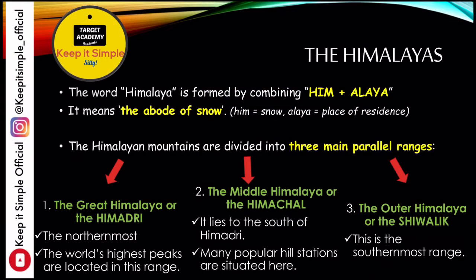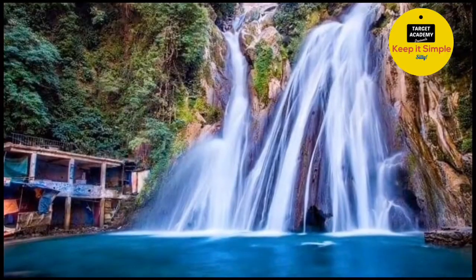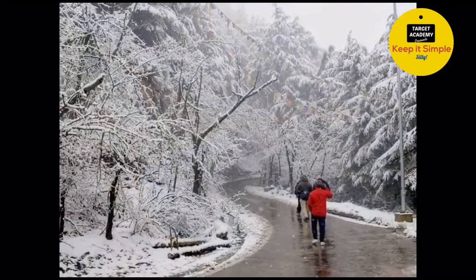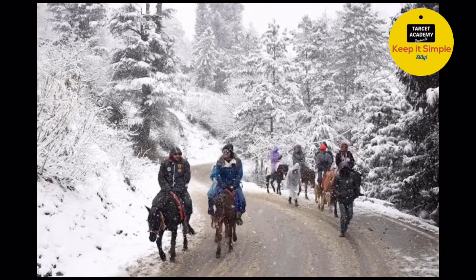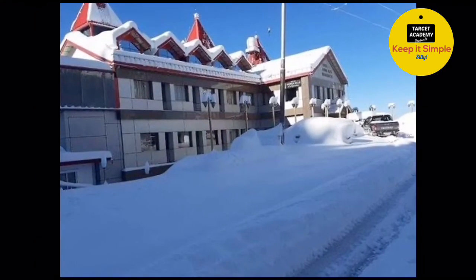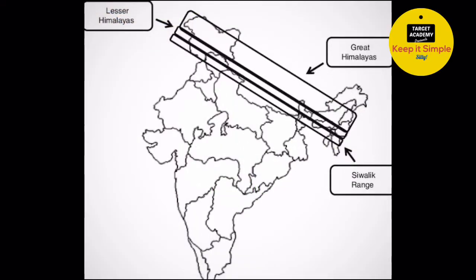The Great Himalayas, or Himadri, are the northernmost range, and the world's highest peaks are located here. The Middle Himalayas, or Himachal, are located to the south of Himadri, and many popular hill stations where we go for holidays are situated in this range. The Outer Himalayas, or Shivalik, are the southernmost range — they have the lowest height and are the lowest situated of the three ranges. After the Shivalik, the plains begin.